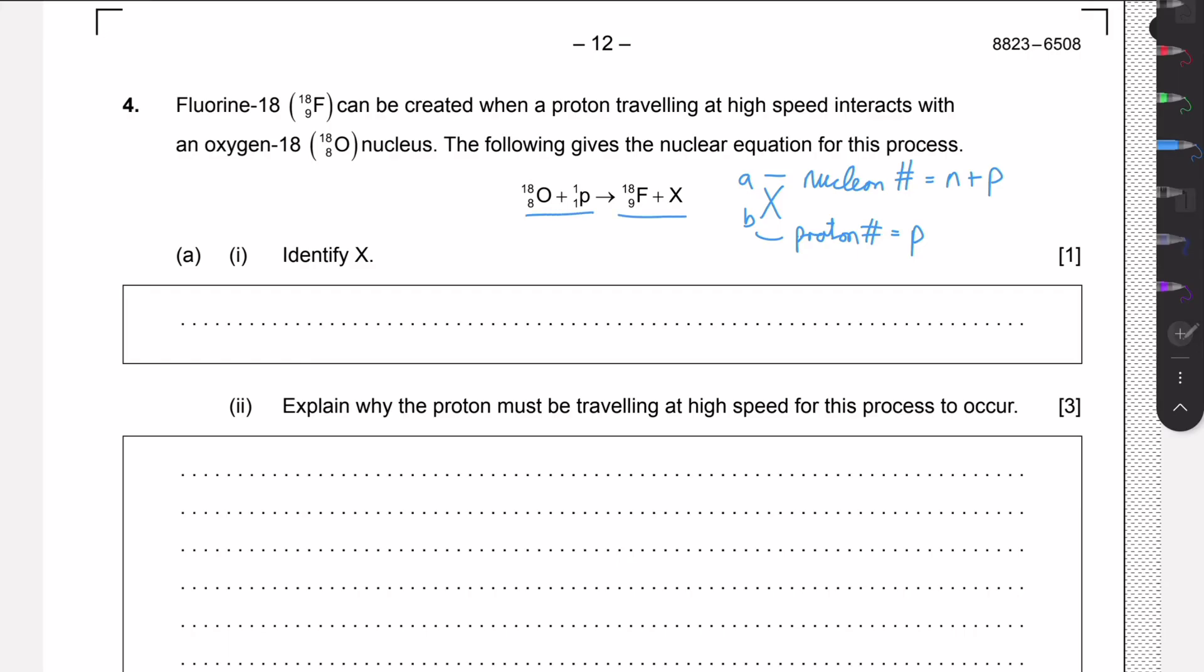On the left side and on the right side, we must have the same number of protons and neutrons, or at least the same amount of nucleons and the same amount of protons. We can see that we have 9 protons on the left, and fluorine already has 9 protons, so X must have 0 protons for that equation to satisfy. If we look at the nucleon numbers, we have 19 up here and 18 here, so we need another one, we need another nucleon for X.